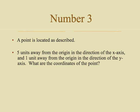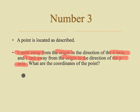Number three: a point is located as described — five units away from the origin in the direction of the x-axis, and one unit away from the origin in the direction of the y-axis. Pause the video and figure out what the coordinates of this point would be. Hopefully you paused the video and figured it out. We know that in the direction of the x-axis it is five units away from the origin, and in the y-axis it is one unit away from the origin. So our coordinate pair for this point — I'm just going to call it point P — would be (5, 1).